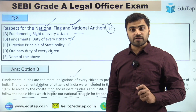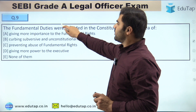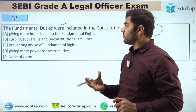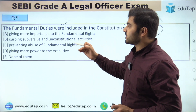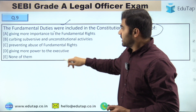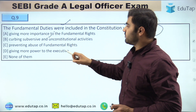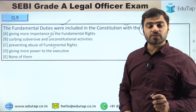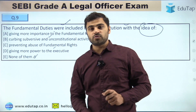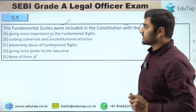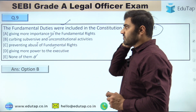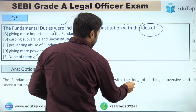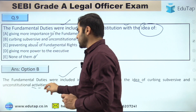Question number 9: The fundamental duties were included in the constitution with the idea of — giving more importance to fundamental rights; curbing subversive and unconstitutional activities; preventing abuse of fundamental rights; giving more power to the executive; or none of them. The right answer is option B — the fundamental duties were included in the constitution with the idea of curbing subversive and unconstitutional activities.